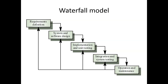What is the waterfall model? In a step-by-step sequential manner, you are following steps. First is requirement definition — you identify the requirement and write down what it is. Then system and software are designed after gathering the requirements. Next is implementation and unit testing — you code the software, then test it. Integration and system testing: you integrate all parts of the system and do system testing. Finally, operation and maintenance: you deliver the system and do maintenance based on customer requirement changes.